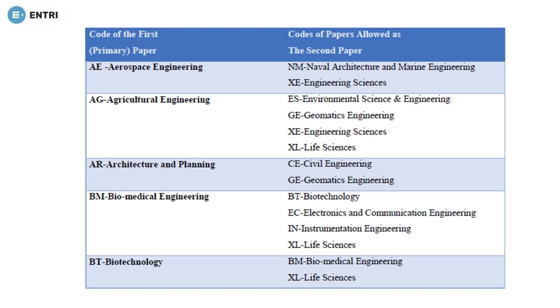So we can directly go to the video. The first column represents the primary paper you can attend, and the second column represents the secondary paper you can attend and how many secondary papers you can attend. Let's start from Aerospace Engineering.